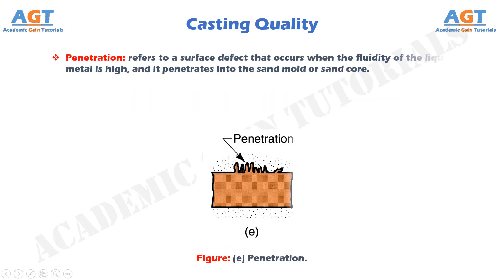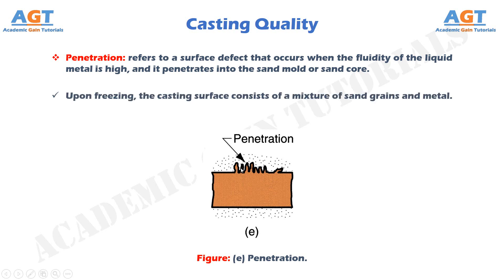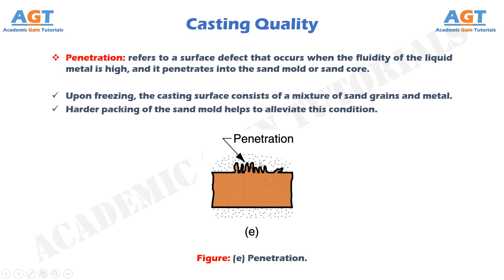Penetration refers to a surface defect that occurs when the fluidity of the liquid metal is high and it penetrates into the sand mold or sand core. Upon freezing, the casting surface consists of a mixture of sand grains and metal. Harder packing of the sand mold helps to alleviate this condition.